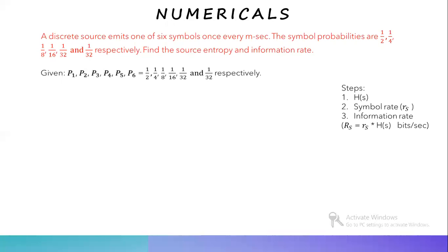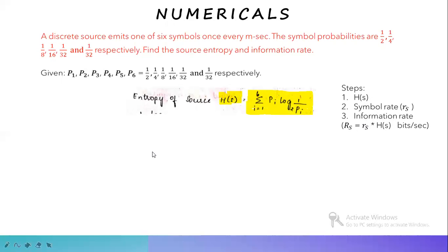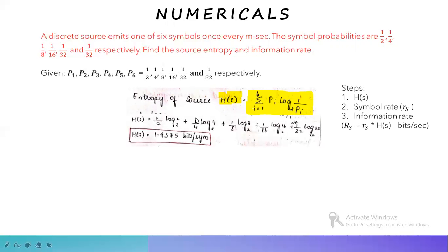The steps are: first calculate H(S), second find symbol rate, third find information rate using RS = rs·H(S). For H(S), as there are six probability values, we take limits i equal to 1 to 6 of Pi·log(1/Pi) base 2. Substituting: 1/2·log2 + 1/4·log4 + 1/8·log8 + 1/16·log16 + 2·(1/32)·log32, all base 2. Solving, we get H(S) equal to 1.9375 bits per symbol.